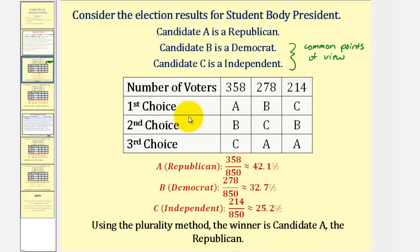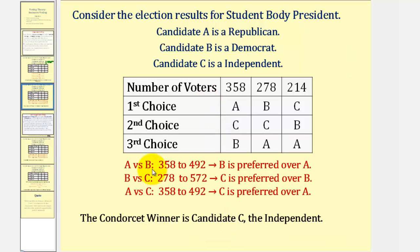Now before we discuss the instant runoff method, let's determine the Condorcet winner. To determine the Condorcet winner, we do a one-to-one comparison, so we determine the winner of A versus B, then B versus C, then A versus C.